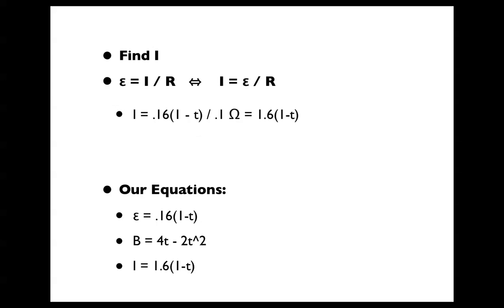Now we find current. The equation for current is voltage equals I times R. So current equals voltage divided by resistance. Current equals 0.16 times 1 minus t divided by 0.1 ohms, giving us current equals 1.6 times 1 minus t.